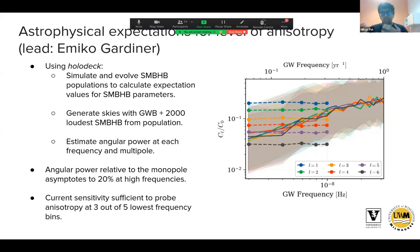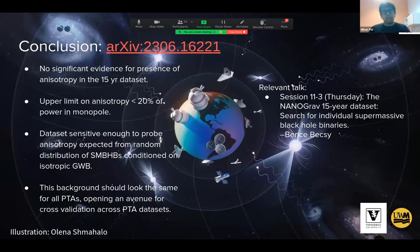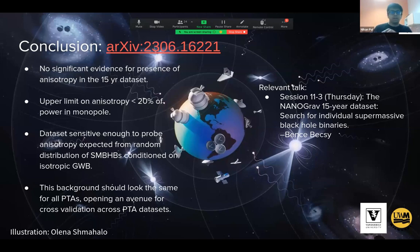It will be very interesting to see how this evolves as we add more pulsars and a longer timing baseline, and whether we can pick up any signature of anisotropy in future datasets. The paper is available on the arXiv — the identifier is at the top of the slide. For those interested in searches for individual supermassive black hole binaries, I'd highly recommend Ben Sebeji's talk on Thursday in session 11-3. I'm happy to take questions.